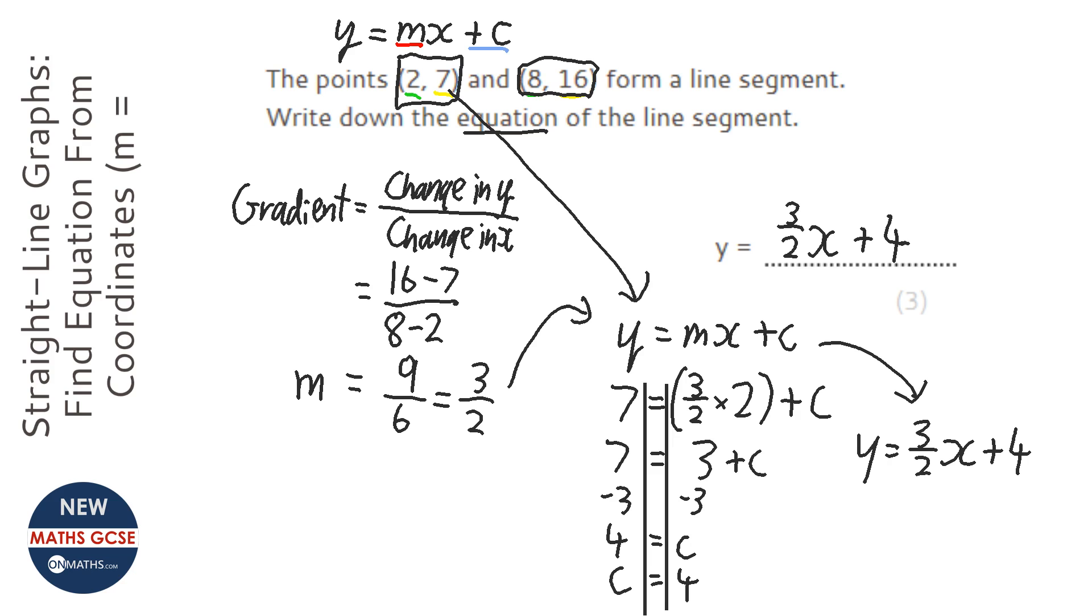Now, there are other ways of doing this, but for me, this is by far the easiest. You find the gradient, you put it into y equals mx plus c, and you put in one of the coordinates, the values of y and x, to find c, and then you just write out the equation.